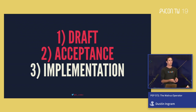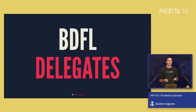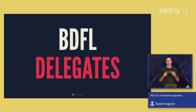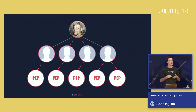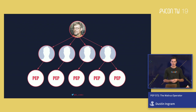Instead, we have BDFL delegates — people that Guido and other core contributors have entrusted with the ability to approve and make decisions on PEPs in Guido's stead. At the top we have Guido, and below him are delegates who each get the opportunity to review, approve, or disapprove PEPs. Sometimes Guido still approves PEPs himself, but usually this is how it works.